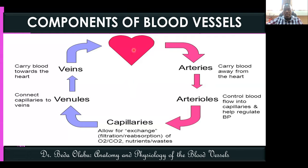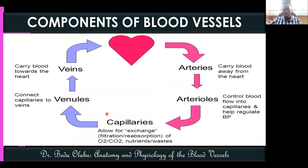From the heart, the blood vessels that leave are called arteries — they carry oxygenated blood to the systemic circulation, or deoxygenated blood to the pulmonary circulation. Arteries divide into smaller vessels called arterioles, which regulate blood pressure. Arterioles lead to capillaries, the exchange units where exchange between bloodstream and tissues occurs. Capillaries then unite to form venules, which form veins that carry blood back to the heart.